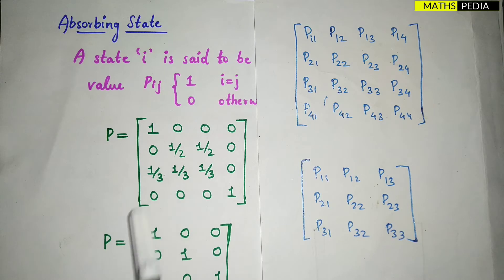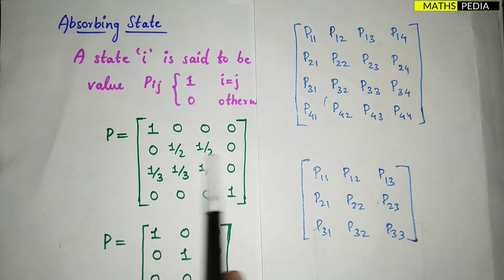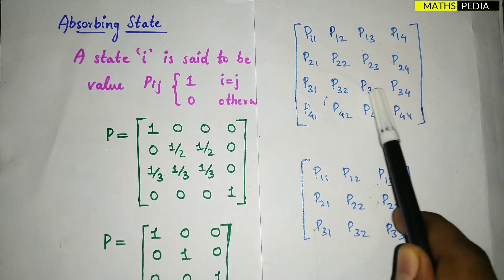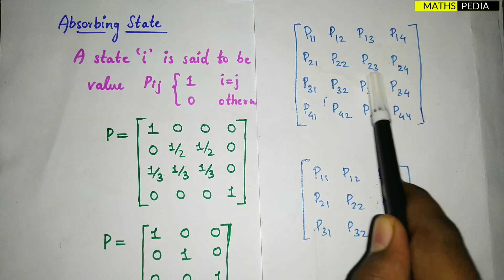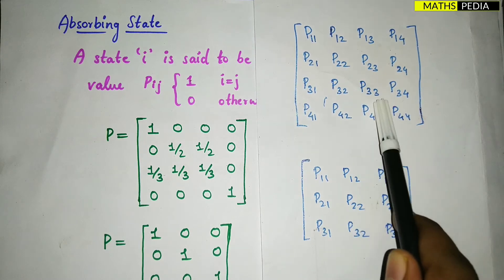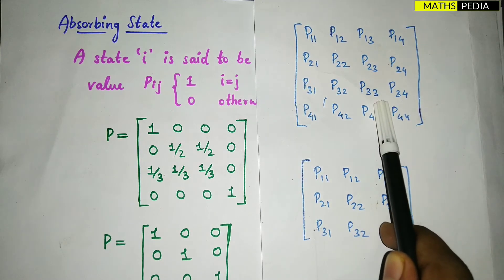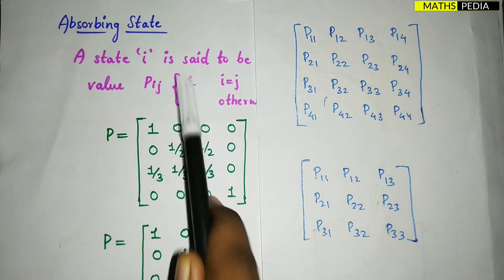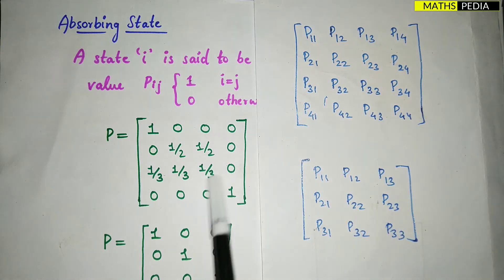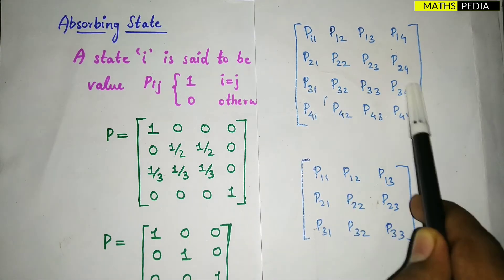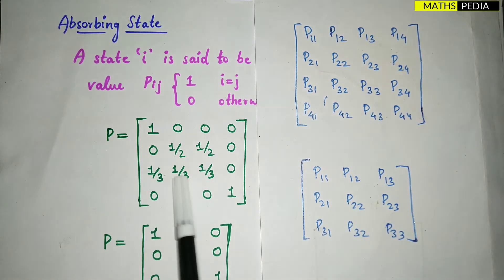Let us see the third row. The i equals j element is P33, which should be 1, but here it is not 1. P33 should be 1 and the other elements should be 0, but that is not the case. So this row is also not in absorbing state.